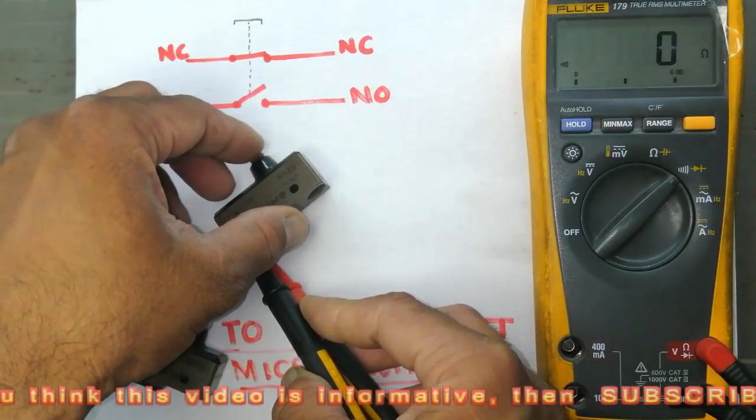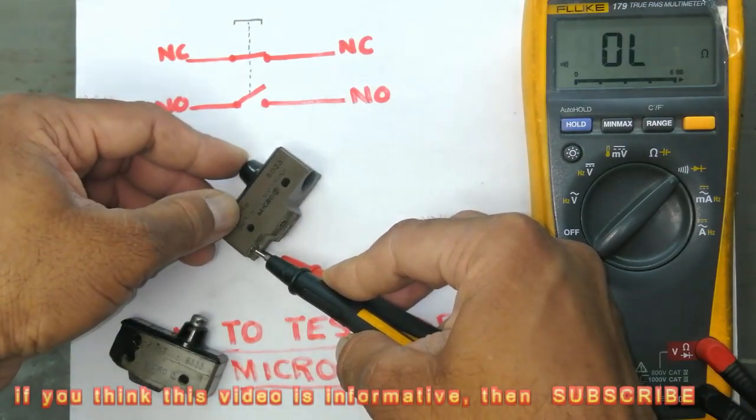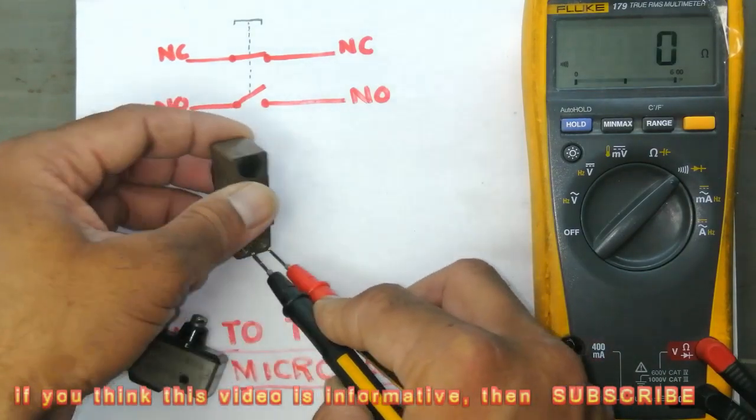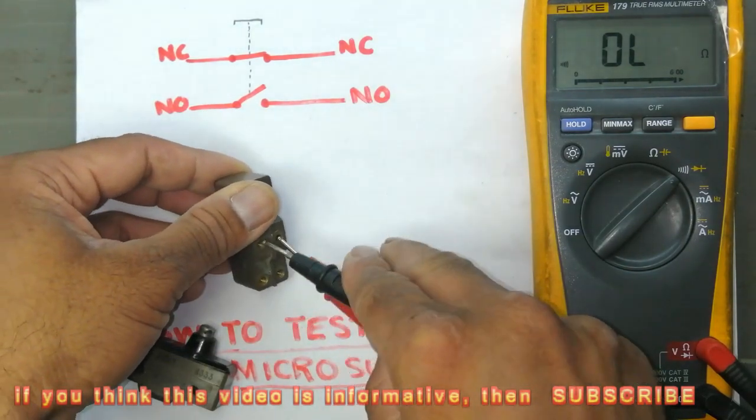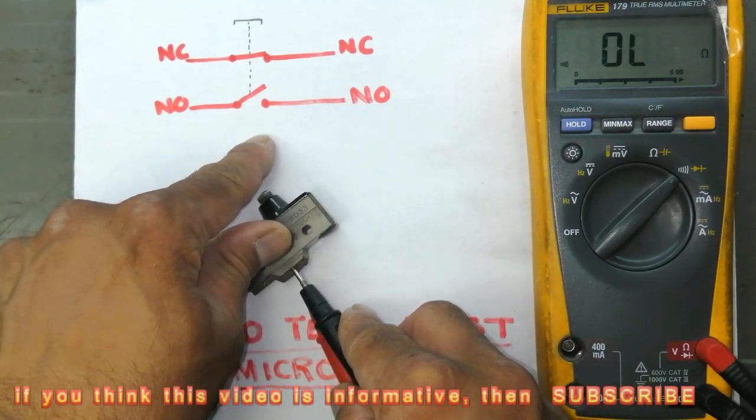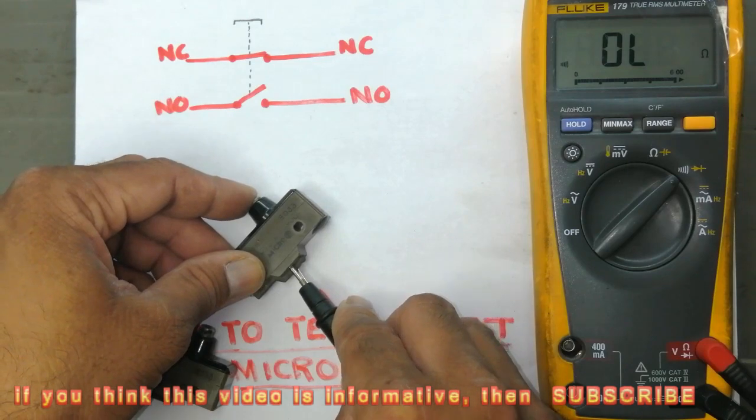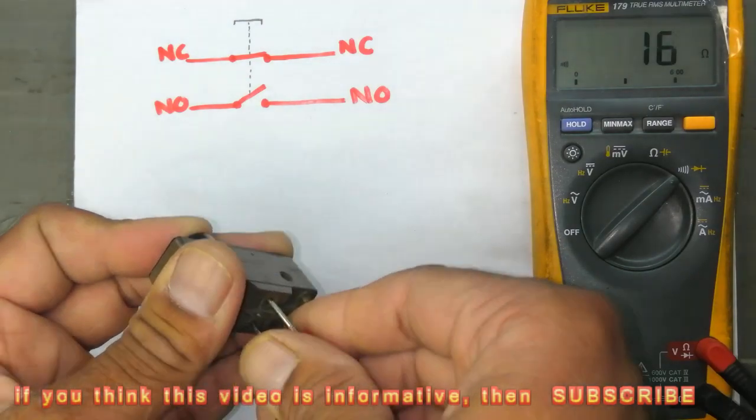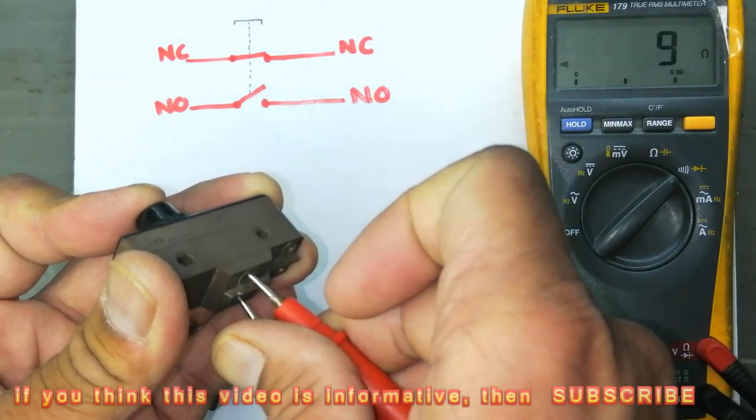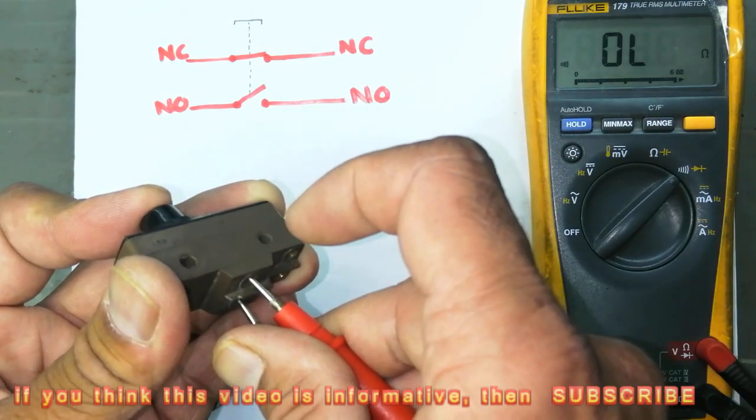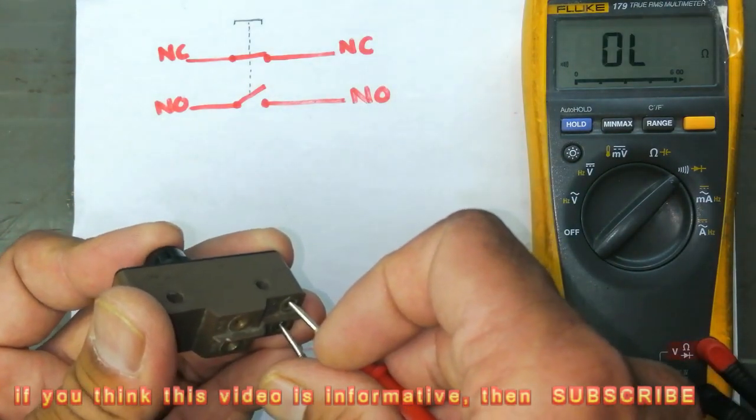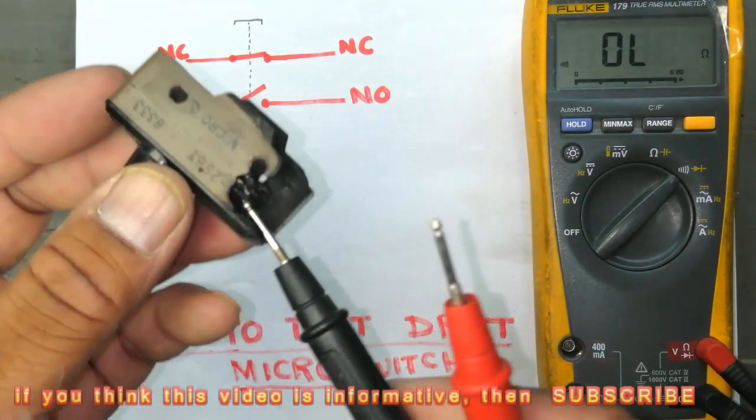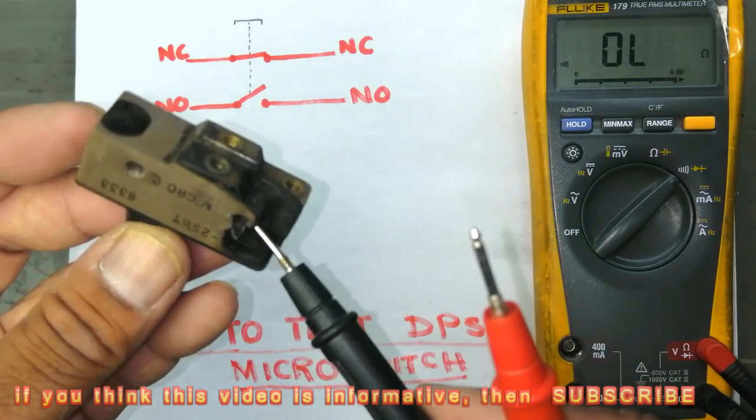These two points will open from here. When I press this one, normally this is open circuit. When I press this one, this will close and this one open. The same here. It was due to over current this burned out, this damage.